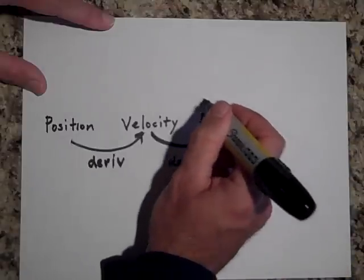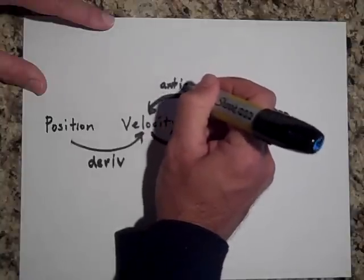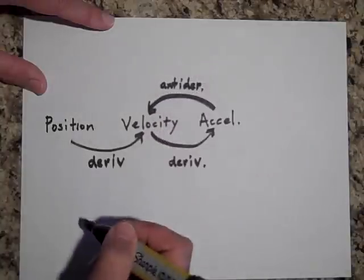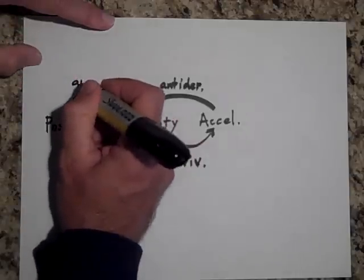But if you had the acceleration and wanted to get the velocity, then you took the antiderivative. And if you had the velocity and wanted to get the position, you took the antiderivative.